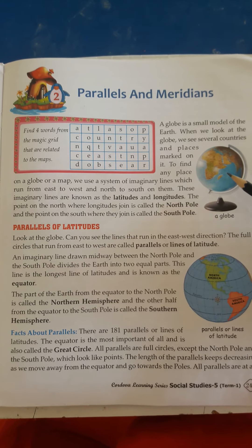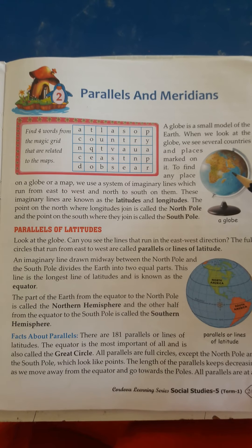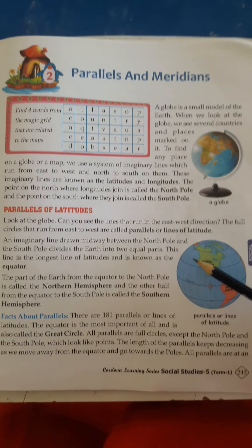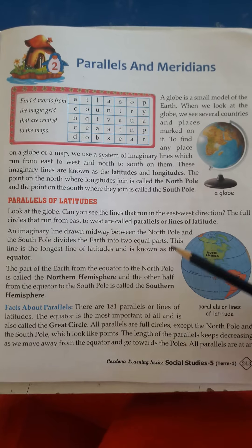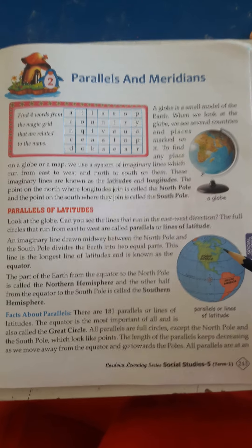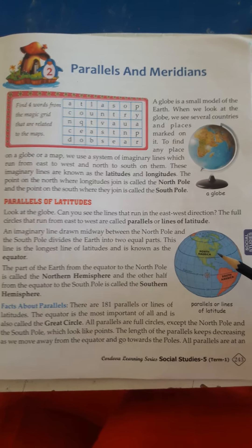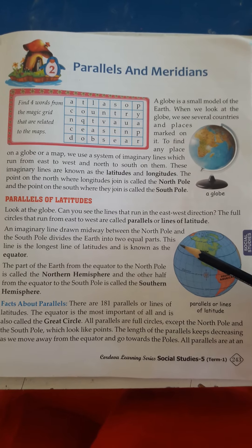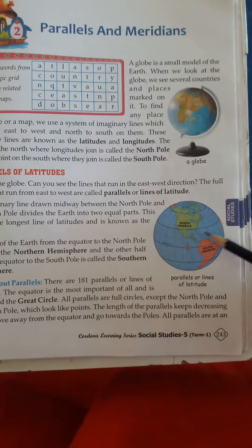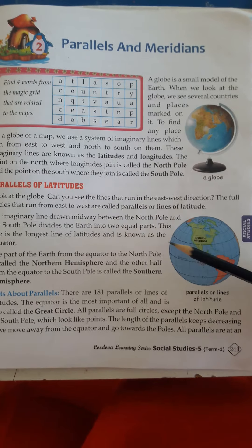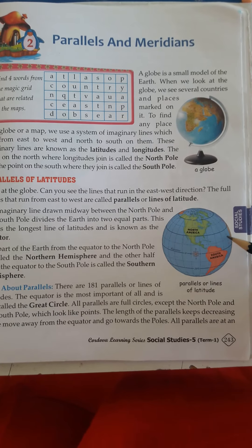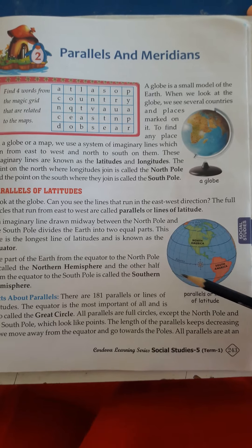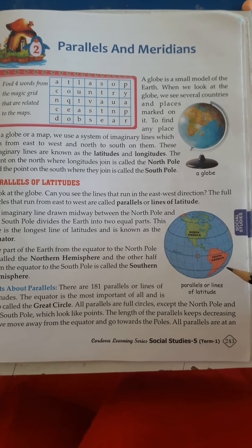What these longitudes and latitudes are, we will see in the lesson further. Parallels of latitudes — when we see at this globe, which is the small model of earth, you can see lines that are passing from east to west direction. These lines that are passing from east to west are known as parallels or lines of latitudes.